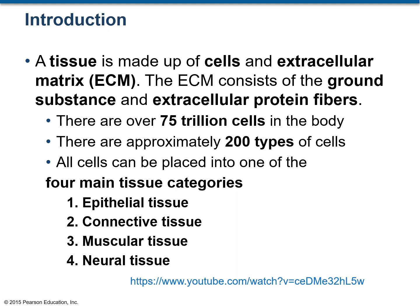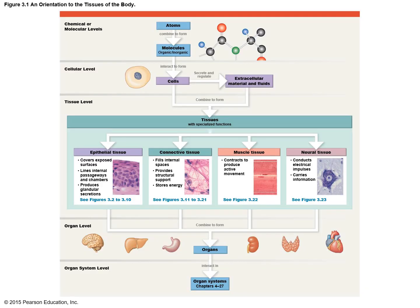In the human body there are four main categories of tissue: epithelial tissue, connective tissue, muscular tissue, and neural tissue. This figure illustrates how cells and extracellular materials and fluids combine to form the four types of tissues in the human body.